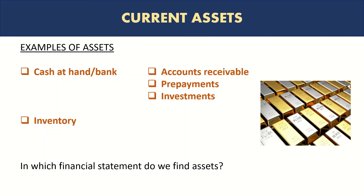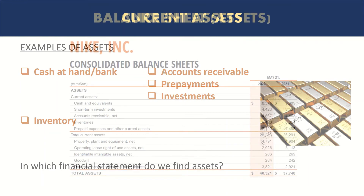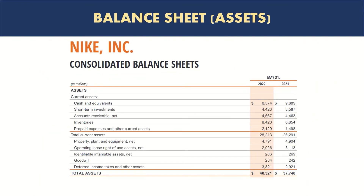In which financial statement do we find assets? You should know it by now — yes, it's the balance sheet. Here is an example from Nike: their consolidated balance sheet for the year ended May 31, 2022. If you're wondering why it is May 31 and not December 31 — December 31 is the calendar year end, but many organizations do not necessarily have the same year end as the calendar. Their 12-month period, their fiscal year or financial year, could be any other month.